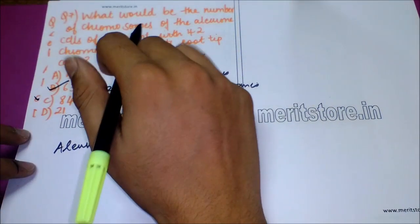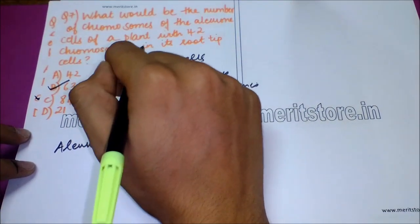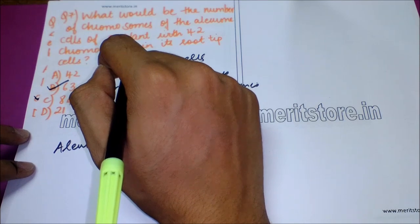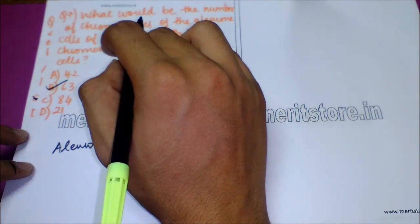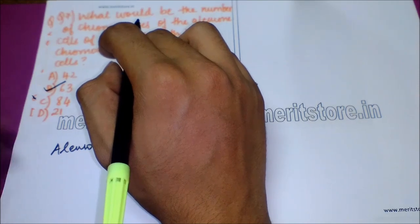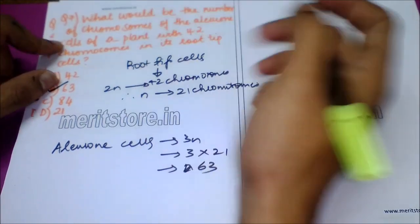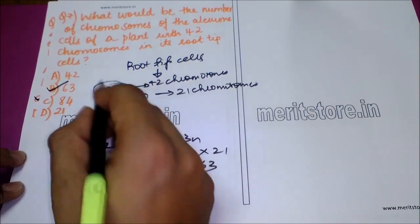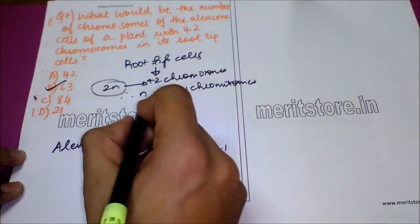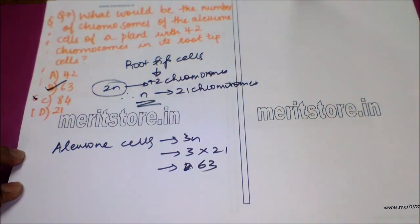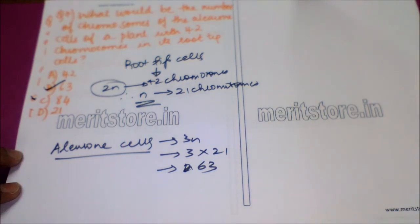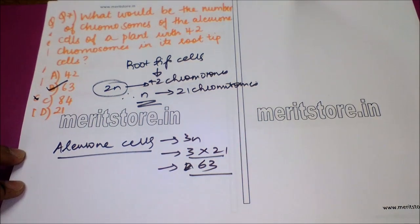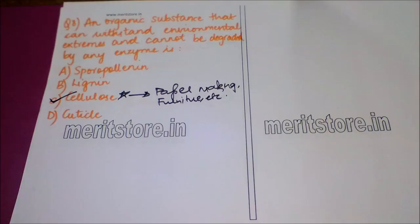The next question is: what would be the number of chromosomes in the aleurone cells of a plant with 42 chromosomes in root-tip cells? Option A: 42. Option B: 63. Option C: 84. Option D: 21. The answer is option B — 63. Root-tip cells are diploid with 42 chromosomes, so the haploid number is 21. Aleurone cells are triploid, so the chromosome number is 3×21 = 63.